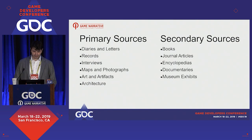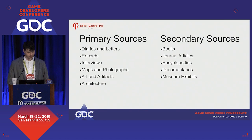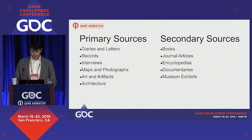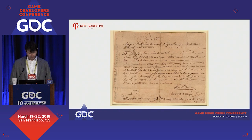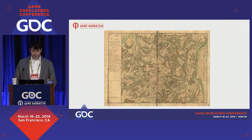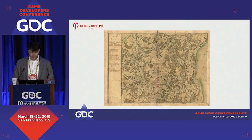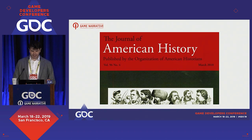Now's the time to start gathering sources. Historians divide our sources into two types. Primary sources are things like diaries, letters, records, interviews, maps, photographs, but also artifacts, art, and architecture that come directly from the period we're studying. For instance, this slave pass featured in the research of my game, and also this map of the area surrounding Williamsburg, both found in Virginia. And of course, you're also going to use secondary sources — books and articles by historians and other scholars who interpret primary sources and draw their own conclusions.